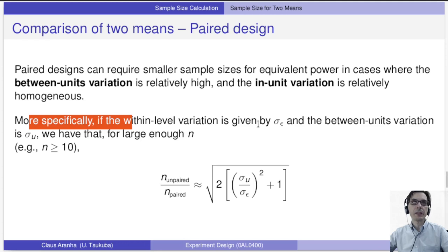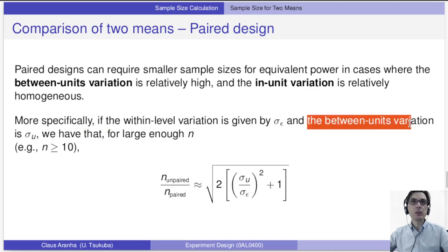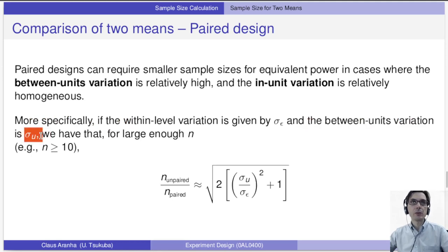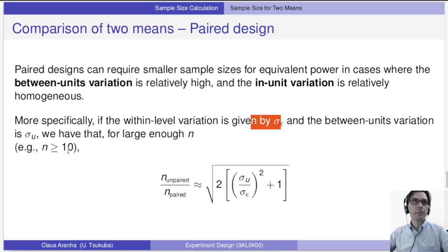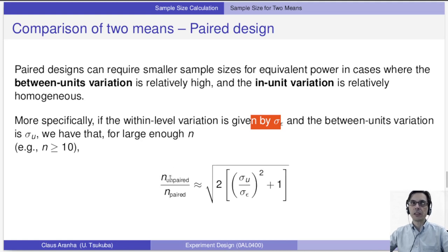If the within-level variation is given by sigma-epsilon and the between-units variation is sigma-u, where sigma-u is the variance between the different observations and sigma-epsilon is the variance between the different treatments, then the ratio between the unpaired sample size and the paired sample size is given by a specific formula. We first calculate the unpaired sample size using the t-test, and then use this formula to calculate the paired sample size.